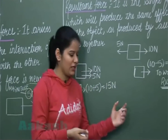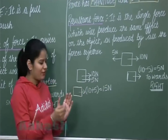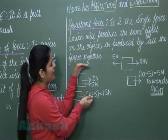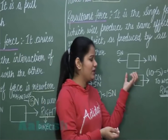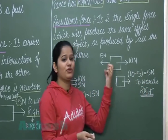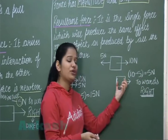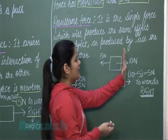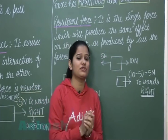The resultant force will be 10 plus 5, which is 15 Newton. This 15 Newton will produce the same effect on this block as is produced by 10 Newton and 5 Newton together. Similarly, in the opposite-direction case, the 5 Newton resultant force produces the same effect as the 10 Newton and 5 Newton acting together.